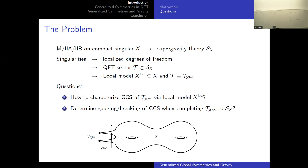The question we want to address is: what happens to the generalized global symmetries of such a quantum field theory when we recouple gravity, or when we put the local model back into the global model? To make progress on this question, I first need to tell you how I want to geometrically characterize these symmetries so that I can track them in this process.